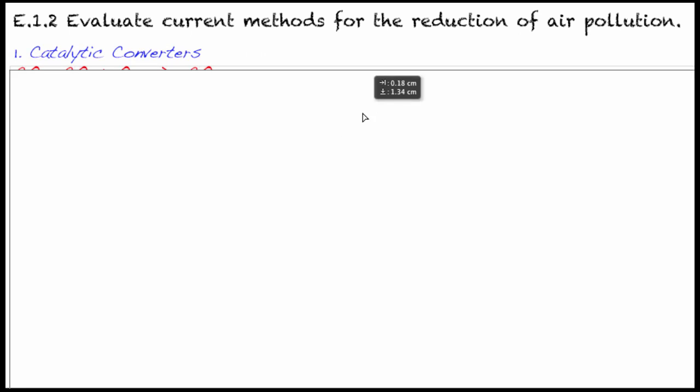Welcome to E1.2. Today we're going to evaluate the current methods for the reduction of air pollution. So you should quickly see if you can name the air pollutants that the IB wants you to know and not confuse them with the greenhouse gases.